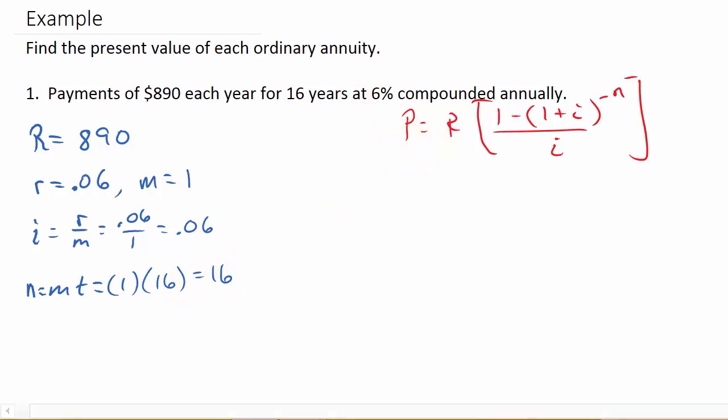Alright, so now all we do now is just plug everything in. So I get P is equal to R, which is 890, times 1 minus 1 plus I, which is 0.06, raised to the negative N, so raised to the negative 16, over I, which is 0.06.